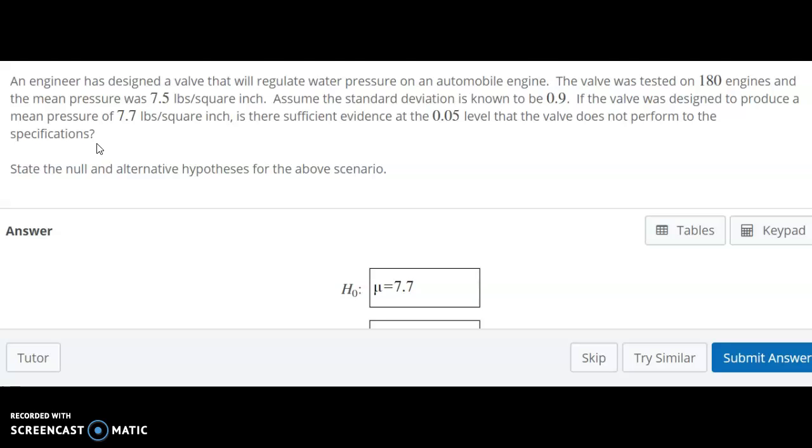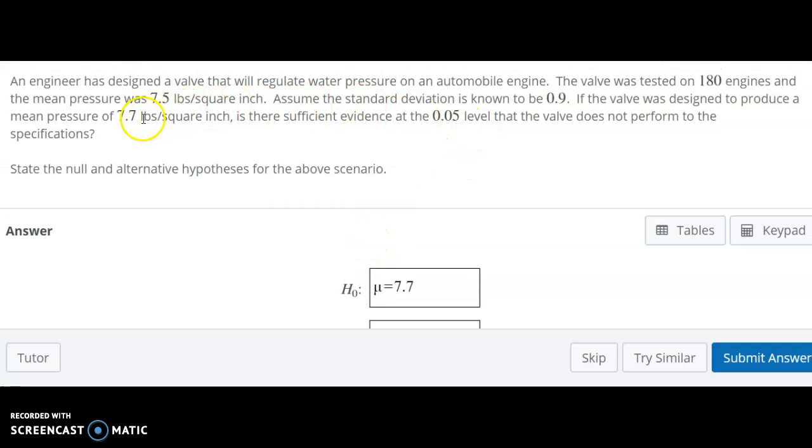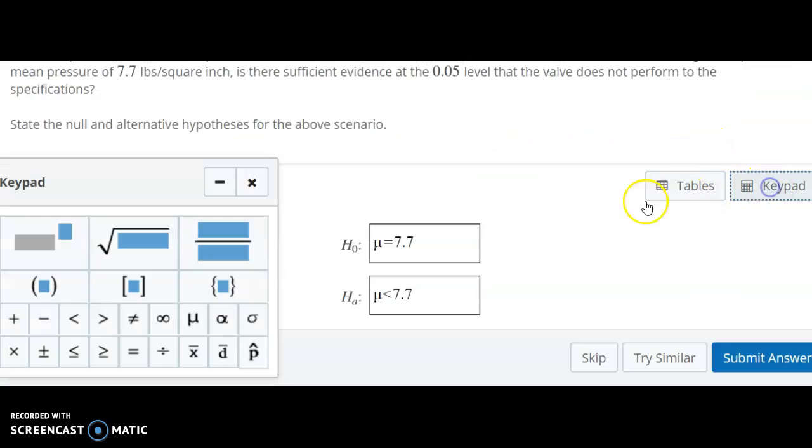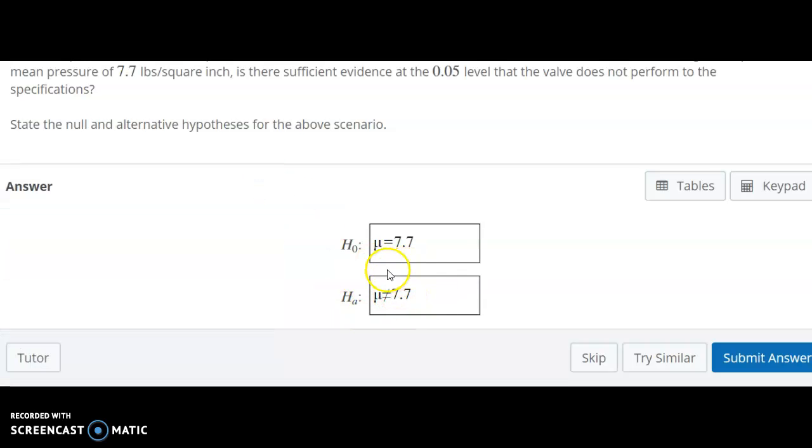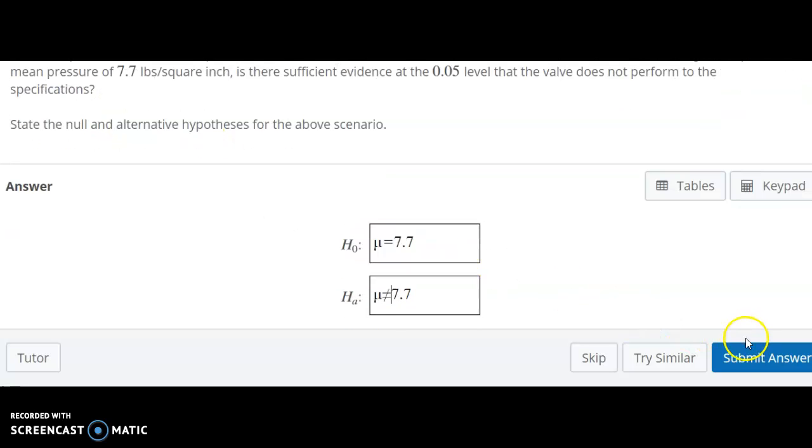So in this case, honestly, it's a little tricky. I think less than would be a valid answer, because it's performing even worse than the specifications. But because they don't say the valve performs less than, we should probably go with performs differently than. In other words, we would reject the null even if it's above the specification. So even if it's something like 7.9 or 8 pounds per square inch, we would reject this particular null.